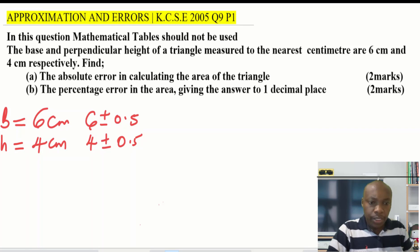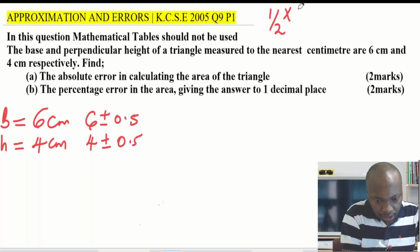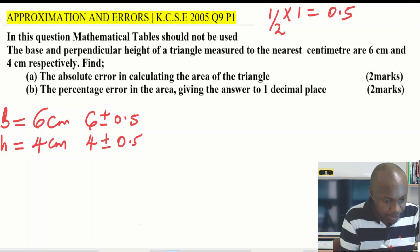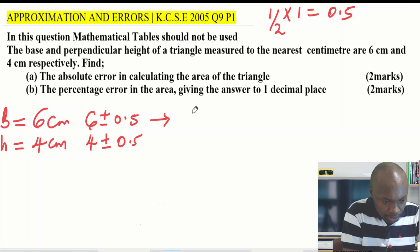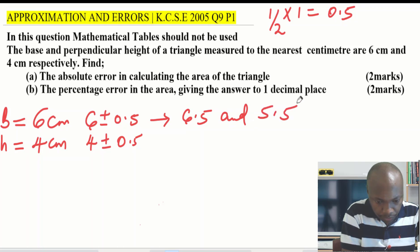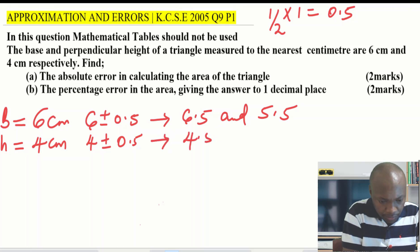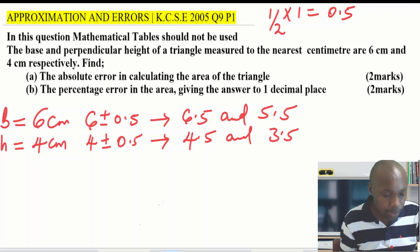The reason it is 0.5 is that the least unit of measurement is one, so the absolute error is half of the least unit of measurement — that is, half times one equals 0.5. Therefore the upper limit of the base is 6.5 and the lower limit is 5.5. For the height, the upper limit is 4.5 and the lower limit is 3.5.